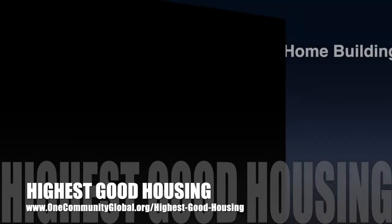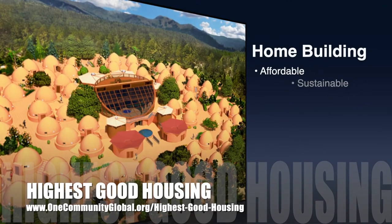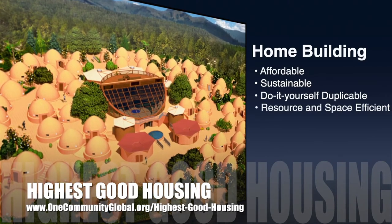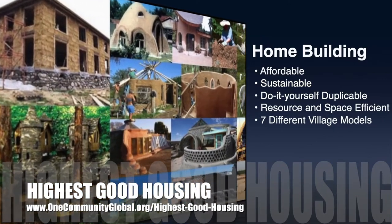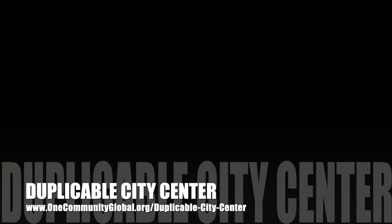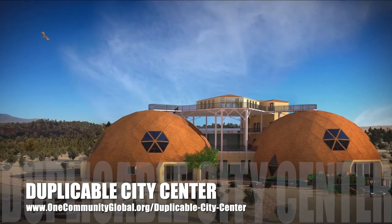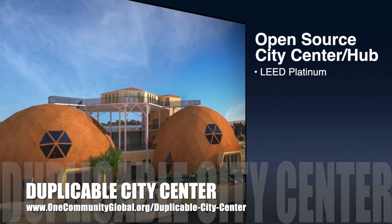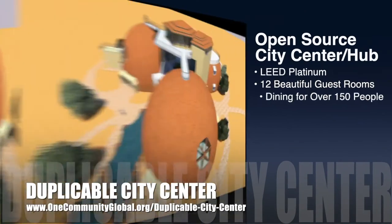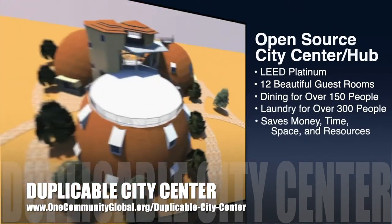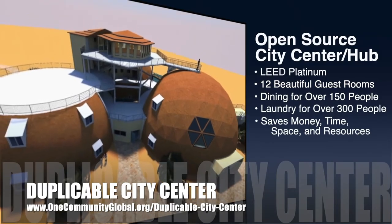The One Community approach to highest good housing is eco-artistic home building that is affordable, sustainable, do-it-yourself, duplicable, resource and space efficient, and consists of seven different sustainably constructed village models. One Community is also creating an open source, duplicable city center designed to be LEED Platinum certified, provide 12 guest rooms, dining for over 150 people, and laundry and recreation space for over 300 people, all while saving money, time, space, and resources.